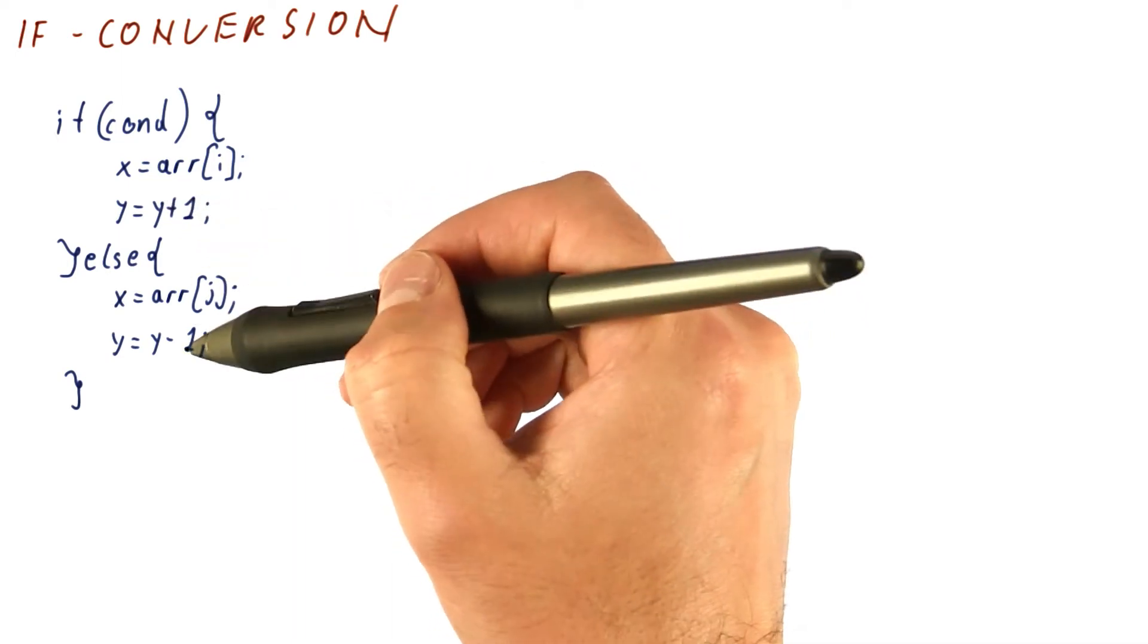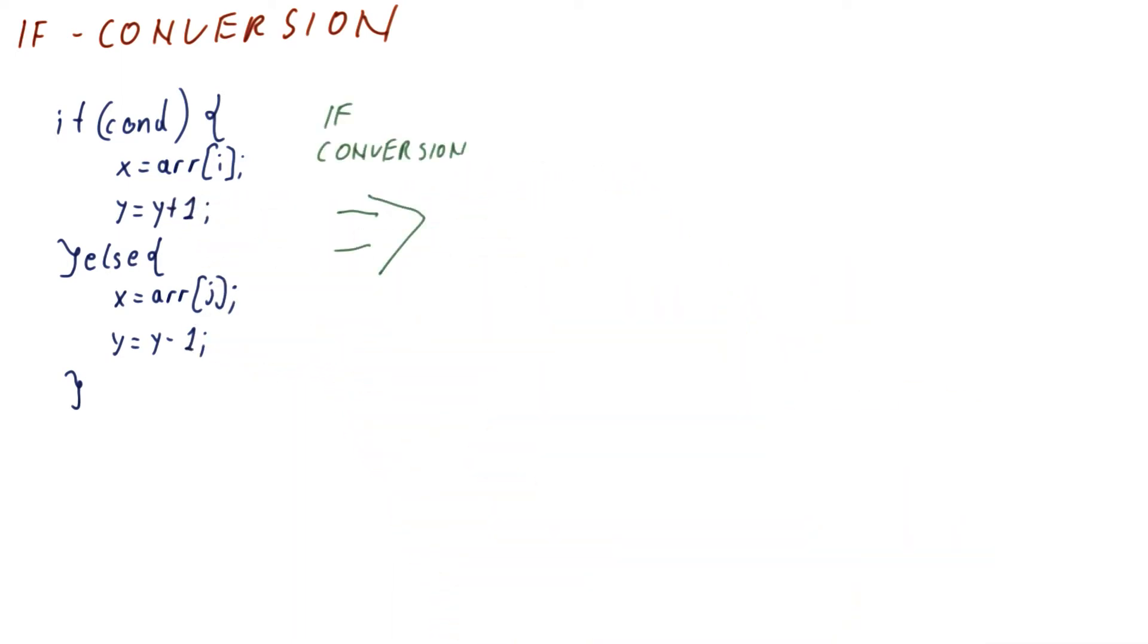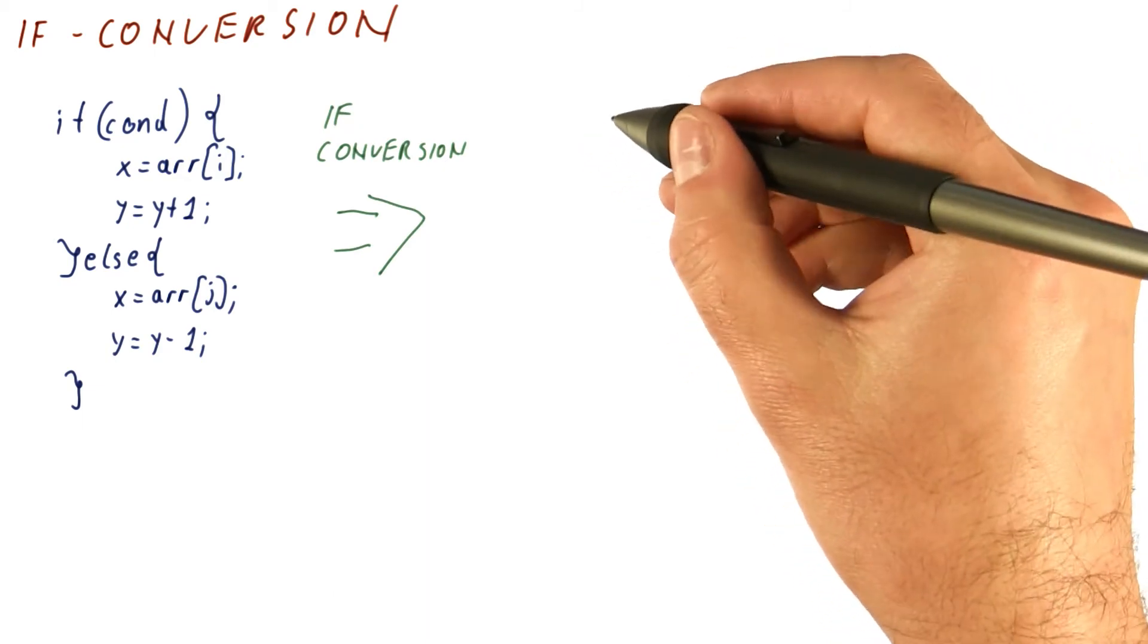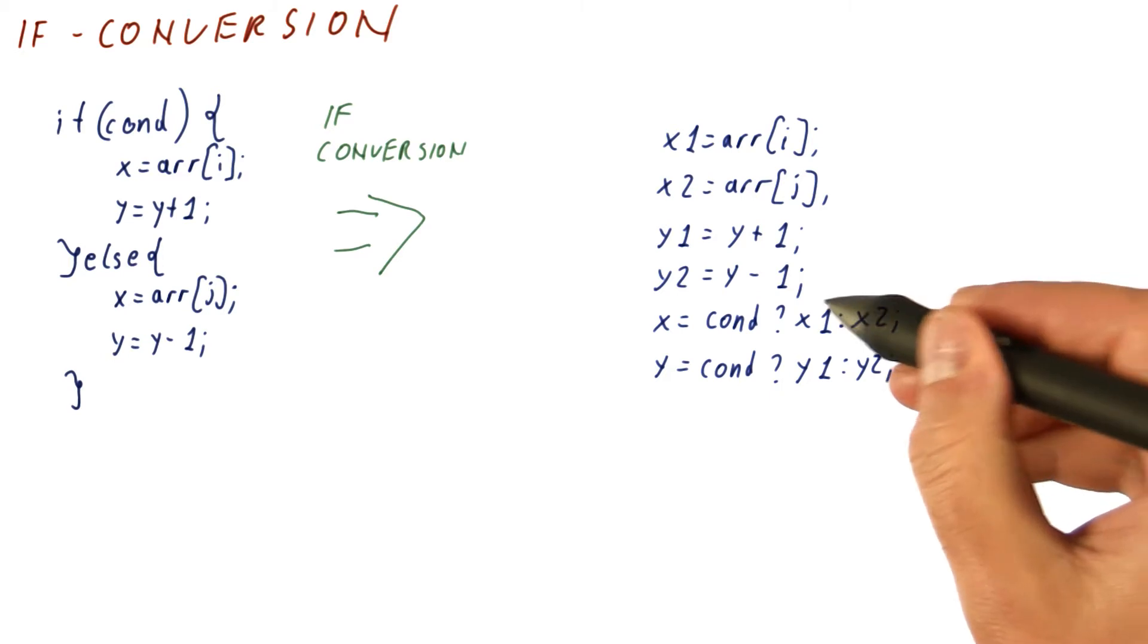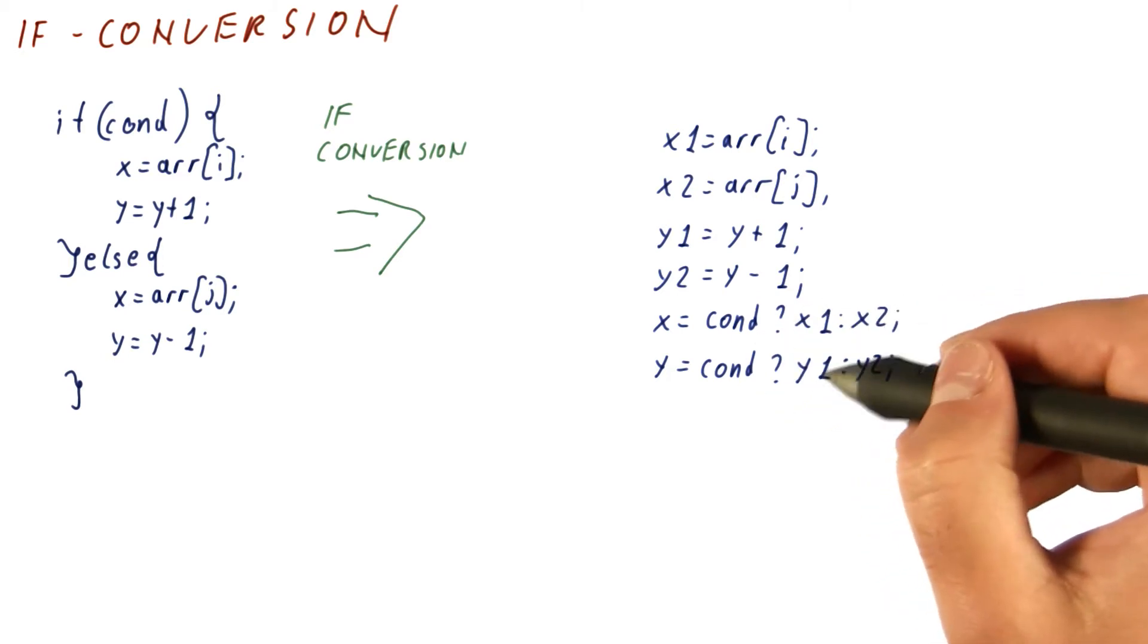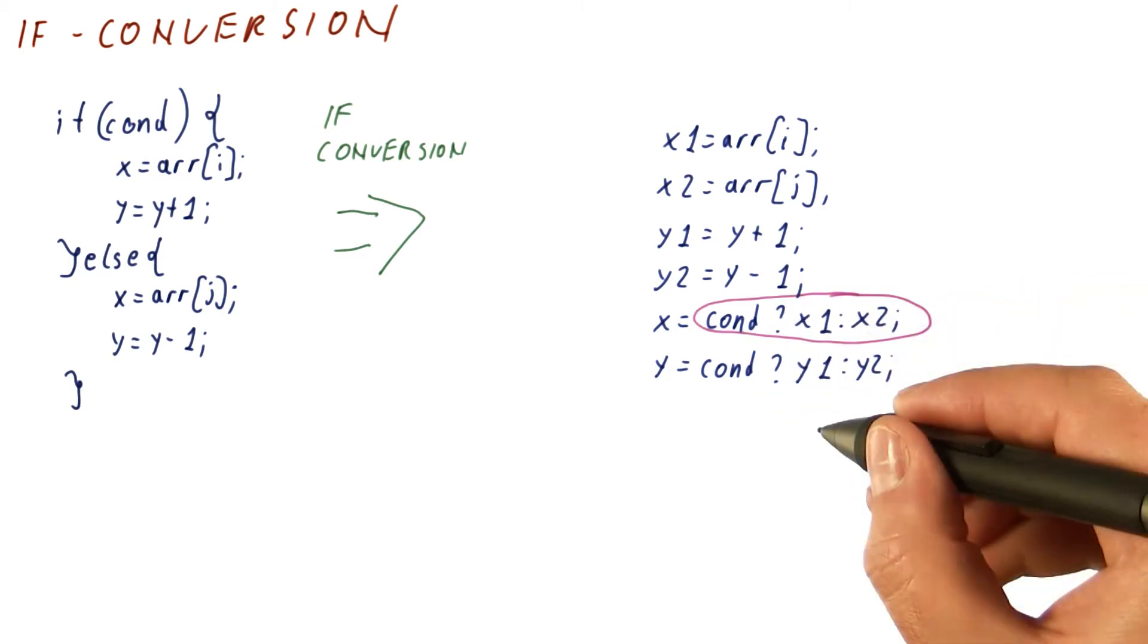If conversion transforms this code into the work of both paths followed by a selection of some sort between the results of the two paths. But there is still a question of how do we do this?